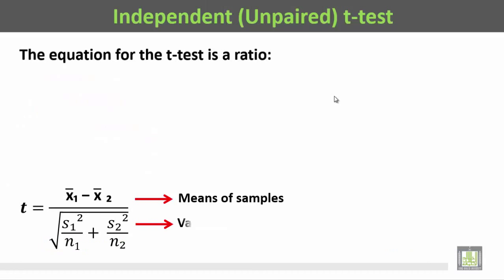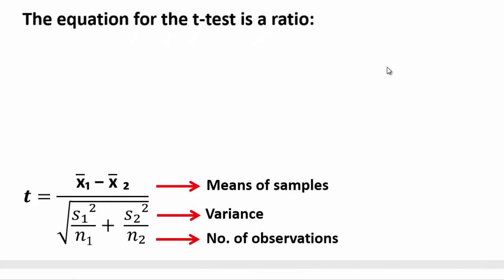The equation for the t-test is a ratio: t equals x bar 1 minus x bar 2 divided by the square root of the first variance divided by the number of cases in the first group, plus the second variance divided by the number of cases in the second group.